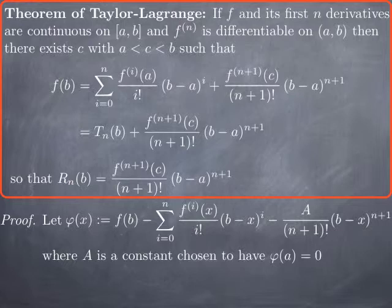When you plug x equal a into φ, you get f of b minus the value of the nth Taylor polynomial of f at b, minus A over (n+1) factorial times (b minus a) to the (n+1). Setting that equal to 0 and solving gives a well-defined number A. What this means is that f of b equals the nth Taylor polynomial evaluated at b, plus A multiplied by (b minus a) to the (n+1) over (n+1) factorial. So what we need to show is that this capital A is the (n+1)th derivative of f at some point c, to get the Taylor-Lagrange theorem.